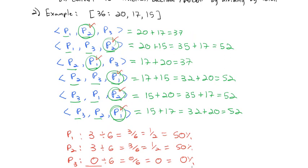We can see that player one and player two have different weights — 20 and 17 votes — but they have the same amount of power when it comes to building a winning coalition, even though they have different numbers of votes. Now it's your turn to practice calculating the Shapley-Shubik Power Index: first identifying all the sequential coalitions, then identifying the pivotal players, and then finding the power based on those.